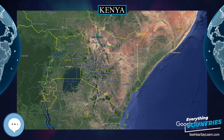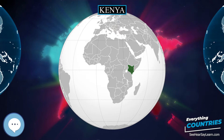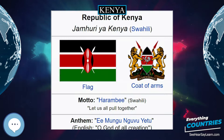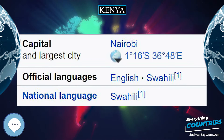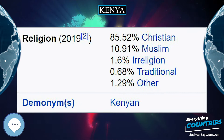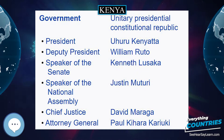Officially the Republic of Kenya (Swahili: Jamhuri ya Kenya) is a country in Africa with 47 semi-autonomous counties governed by elected governors. At 580,367 square kilometers (224,081 square miles), Kenya is the world's 48th largest country by total area. With a population of more than 52.2 million people, Kenya is the 27th most populous country. Kenya's capital and largest city is Nairobi, while its oldest city and first capital is the coastal city of Mombasa. Kisumu city is the third largest city and also an inland port on Lake Victoria. Other important urban centers include Nakuru and Eldoret.